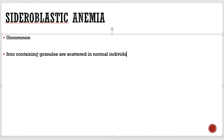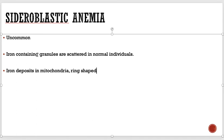Sometimes iron deposits occur in mitochondria. When deposited in the mitochondria, they form ring-shaped deposits — they appear ring-shaped. When we see this, we say the patient has sideroblastic anemia. This ring appearance is the hallmark of sideroblastic anemia.